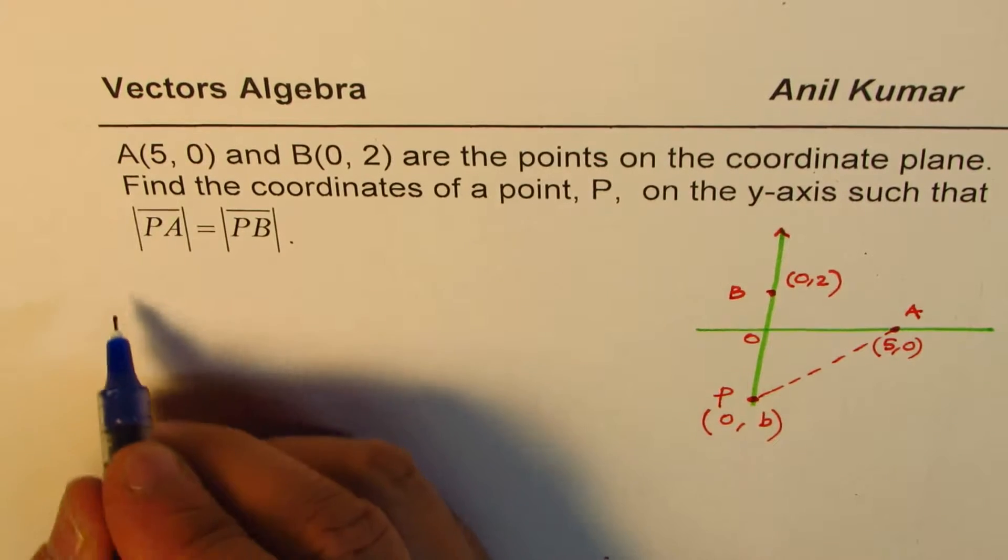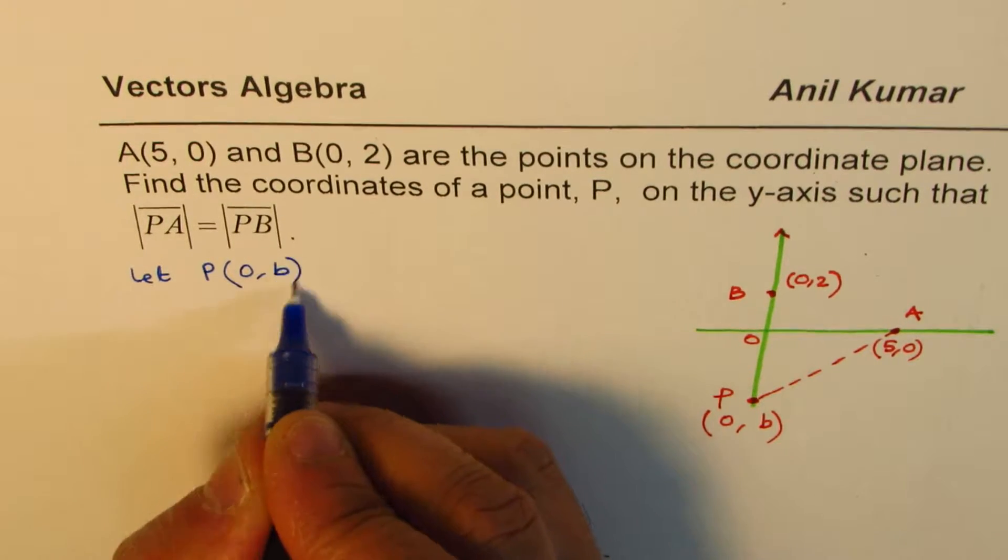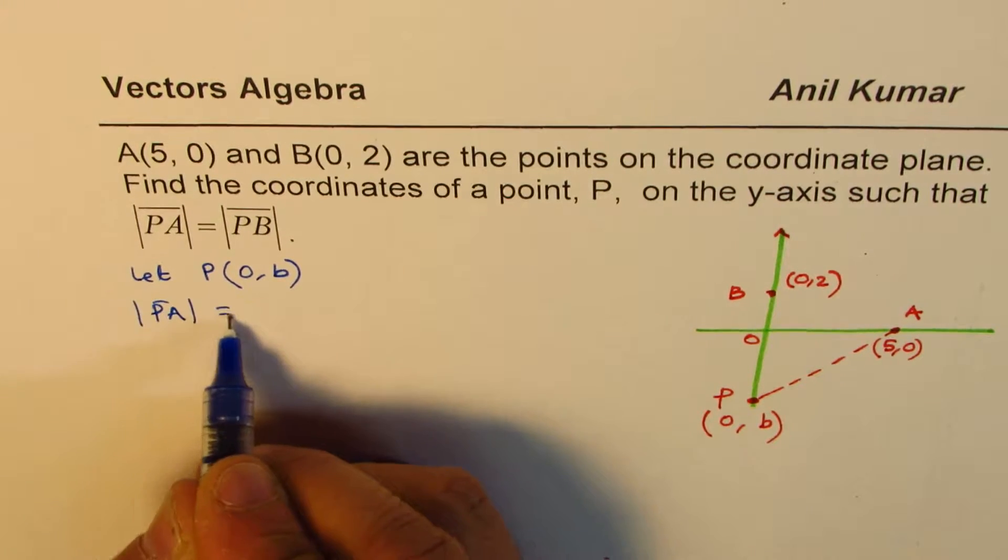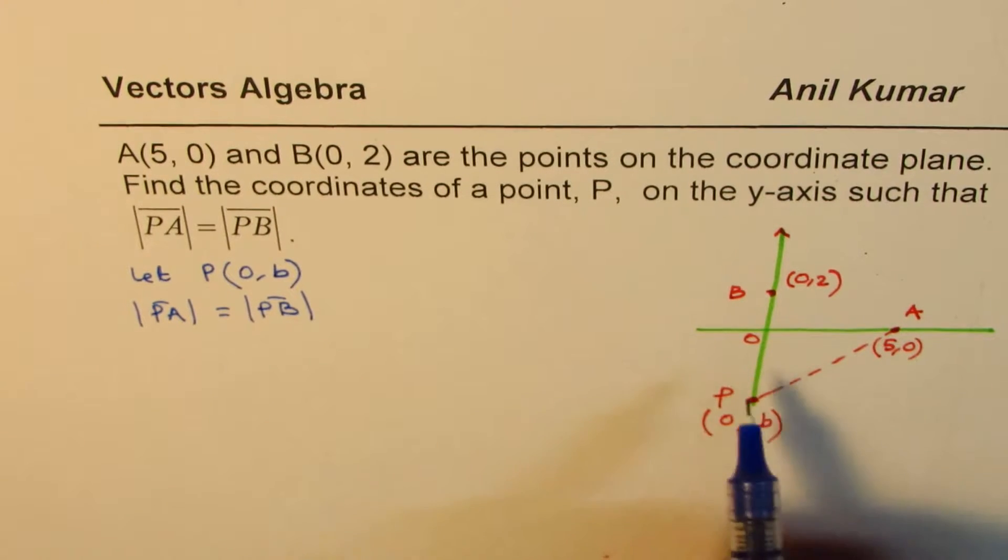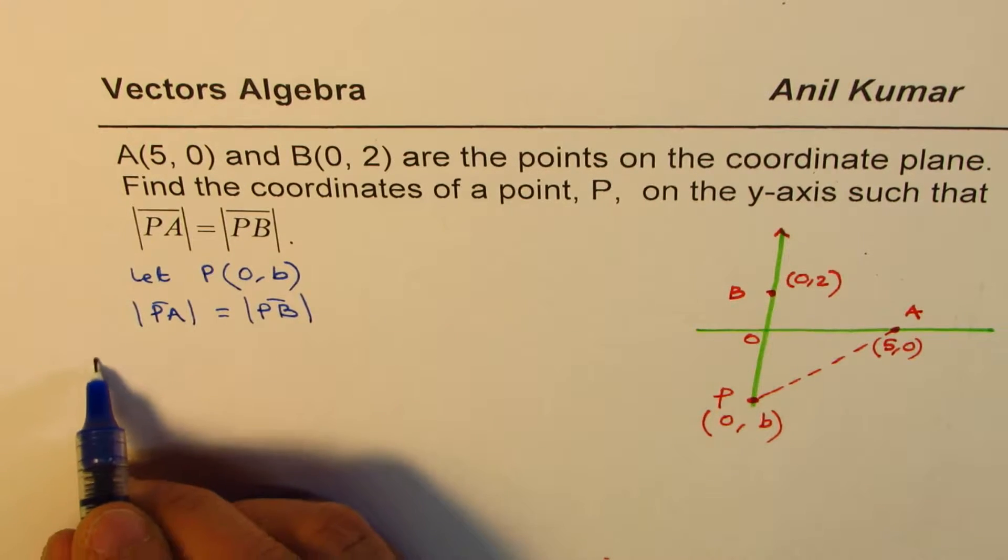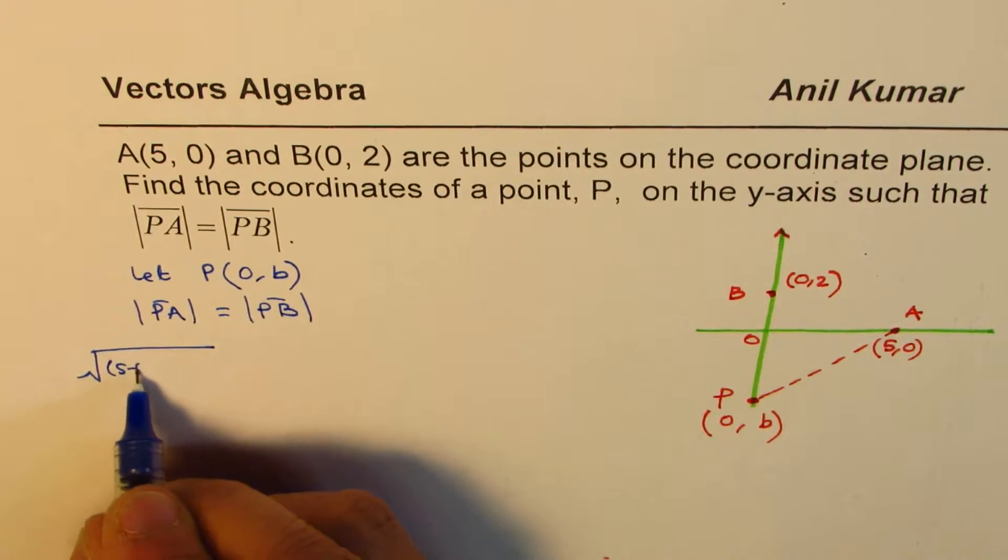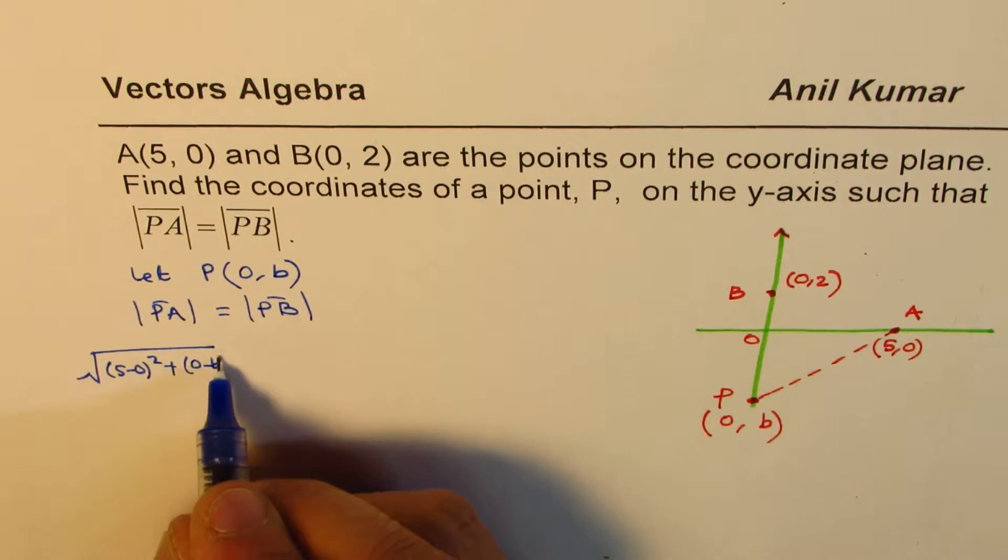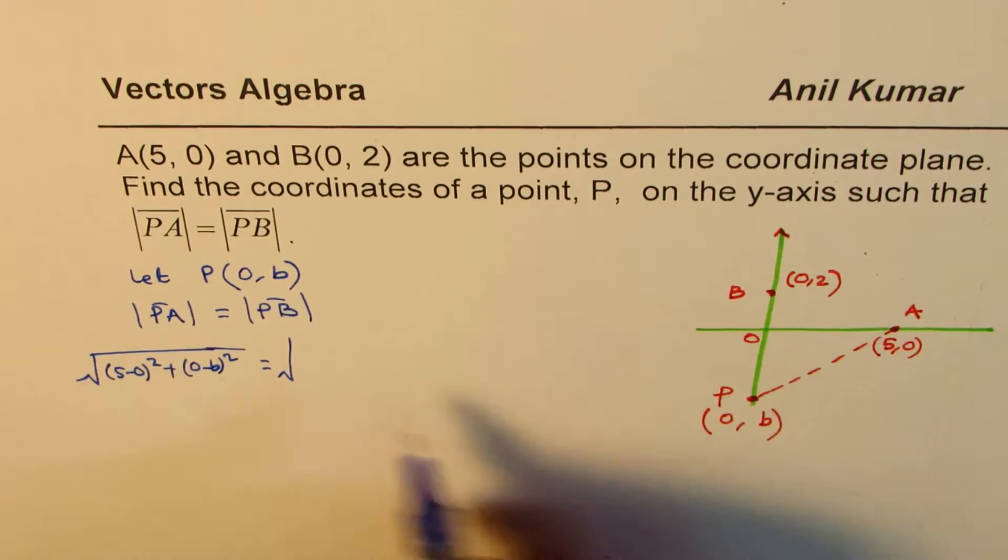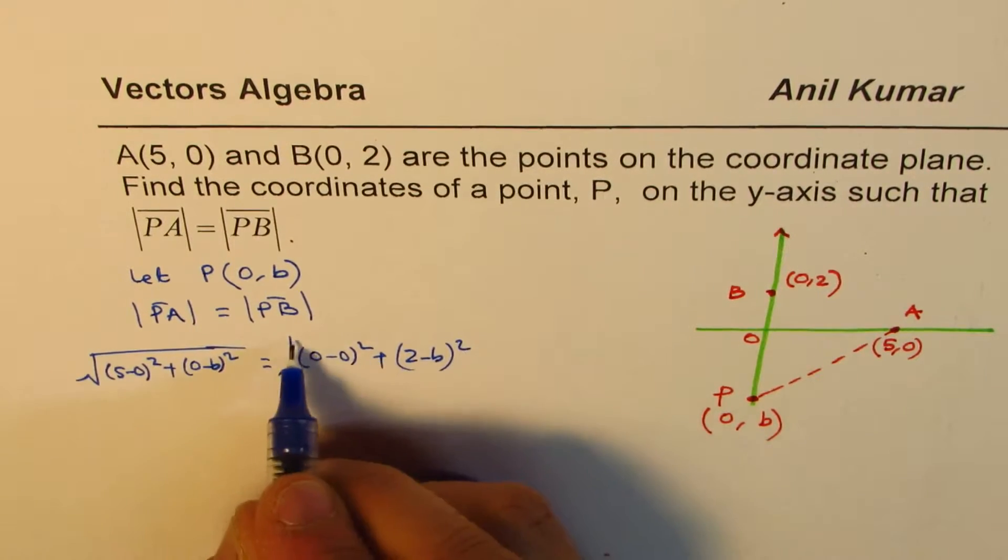What we have assumed here is let the point P be (0, b). In that case, if we have to say PA magnitude equals magnitude of PB, it basically means √[(x₂-x₁)² + (y₂-y₁)²]. So with this we could write as √[(5-0)² + (0-b)²] equals √[(0-0)² + (2-b)²].